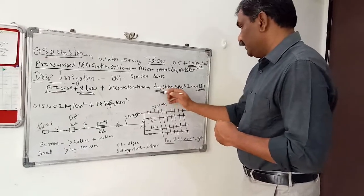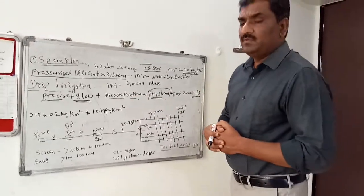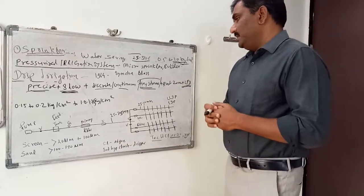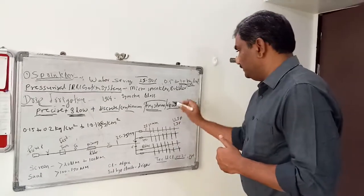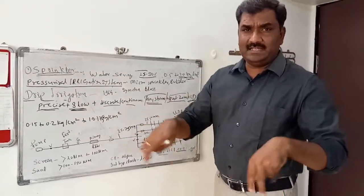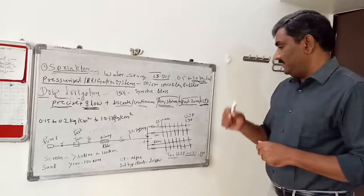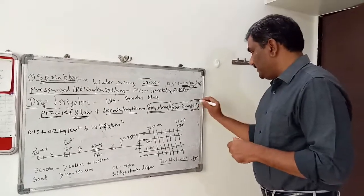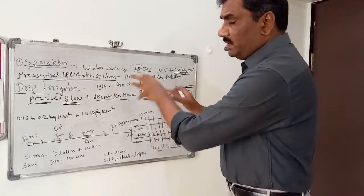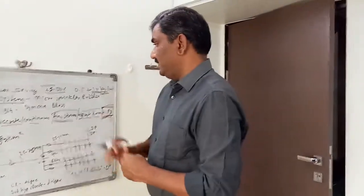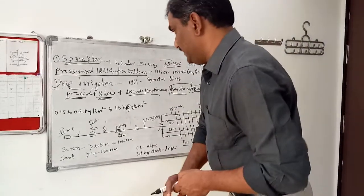Discrete or continuous tiny streams mean we are reducing the speed of water and applying as small an amount as possible. We apply water only to the root zone, not to unnecessary areas, thereby saving water and increasing water efficiency by minimizing losses. A low pressure delivery system means we can minimize the energy required to run the pump. This covers micro sprinklers, bubbler irrigation, and drip irrigation.